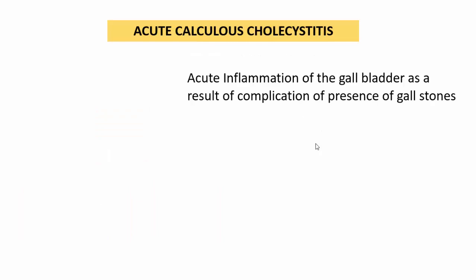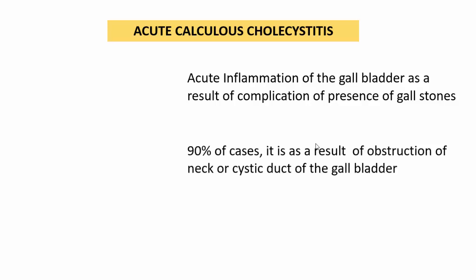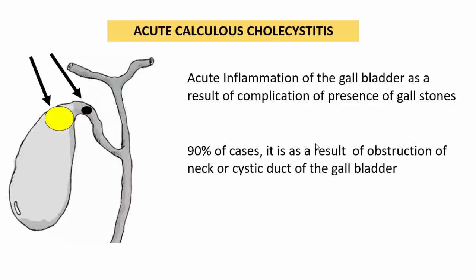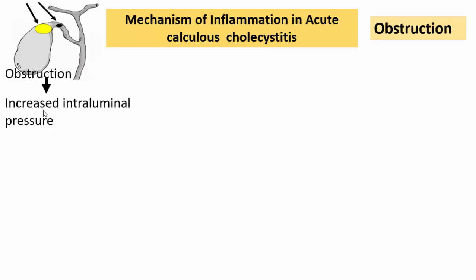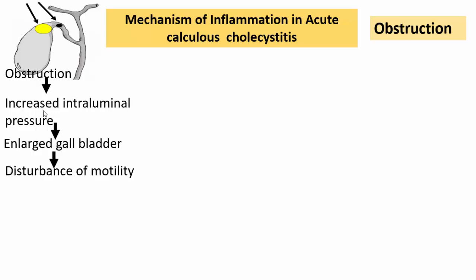Acute calculus cholecystitis is a condition of the gallbladder which results as a complication of the presence of gallstones. In 90% of cases, it is a result of obstruction of the neck or cystic duct of the gallbladder. Obstruction results in increased intraluminal pressure, which causes enlargement of the gallbladder, disturbance of motility, and ultimately obstruction of venous flow and ischemia.